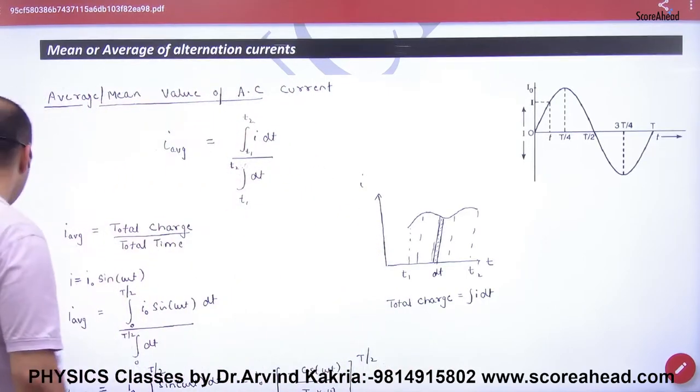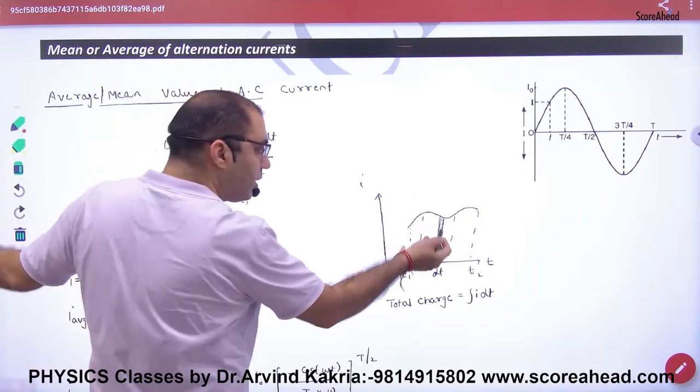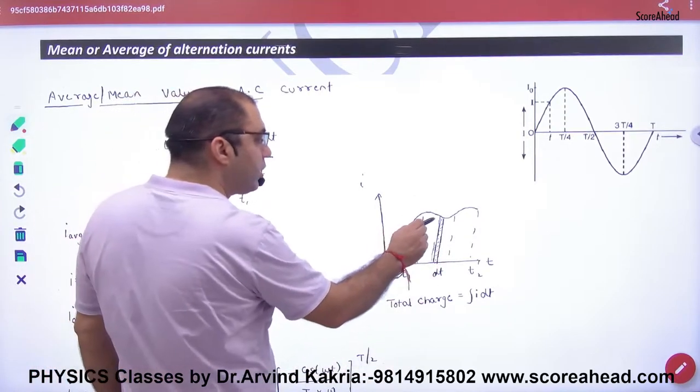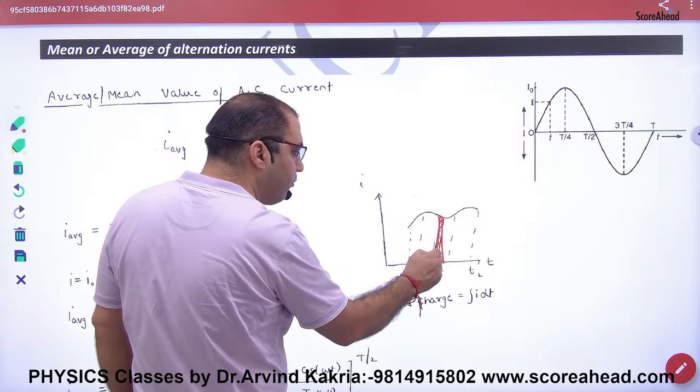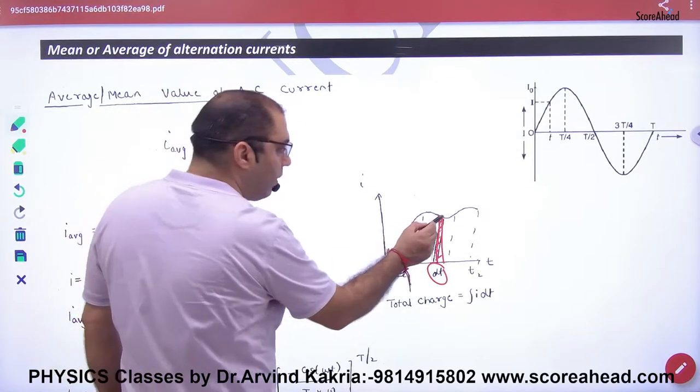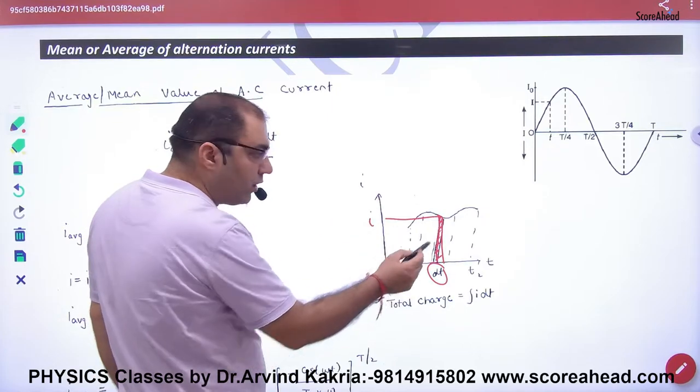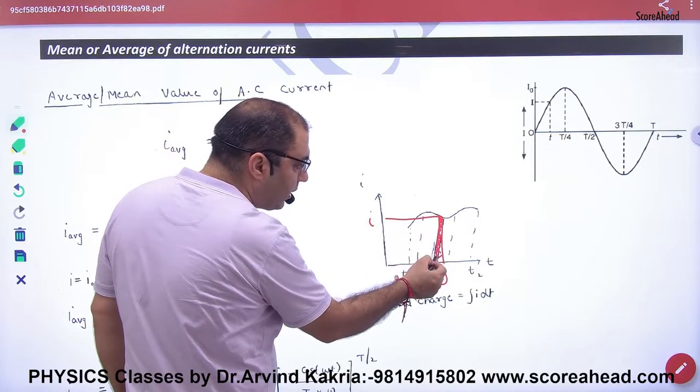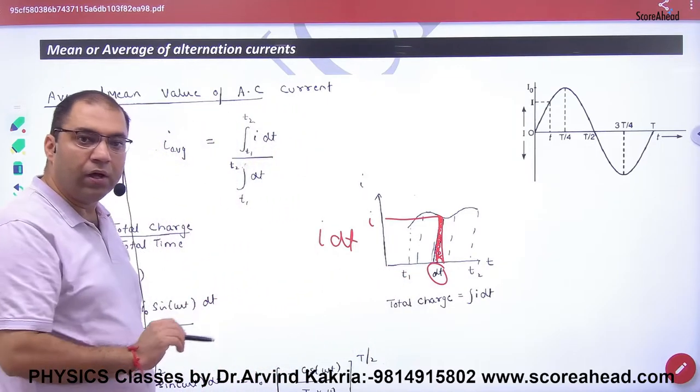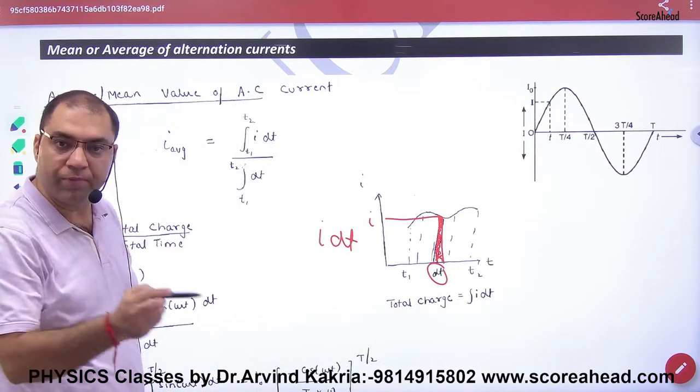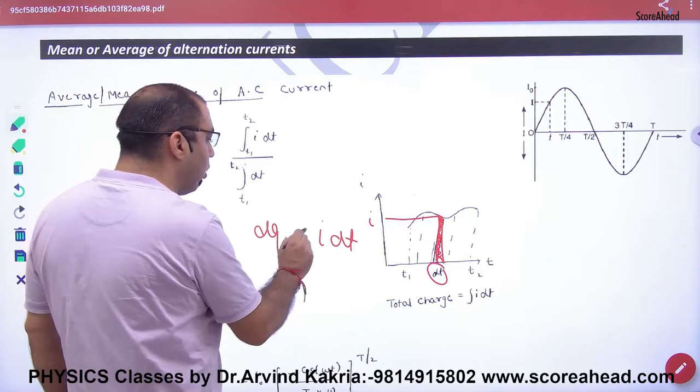So in this case, if I talk about total charge, how much total charge is? Take a small portion of this element. This portion is dt time. And imagine that this current value is i. So what will this small area give? i dt, length into breadth i dt. And current into time is charge.